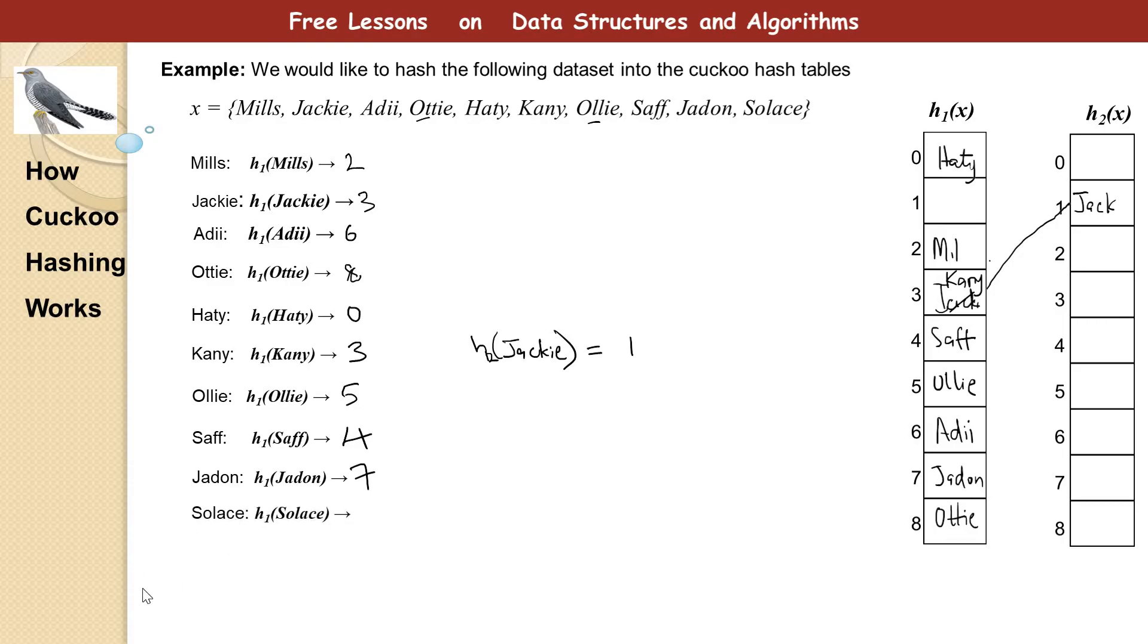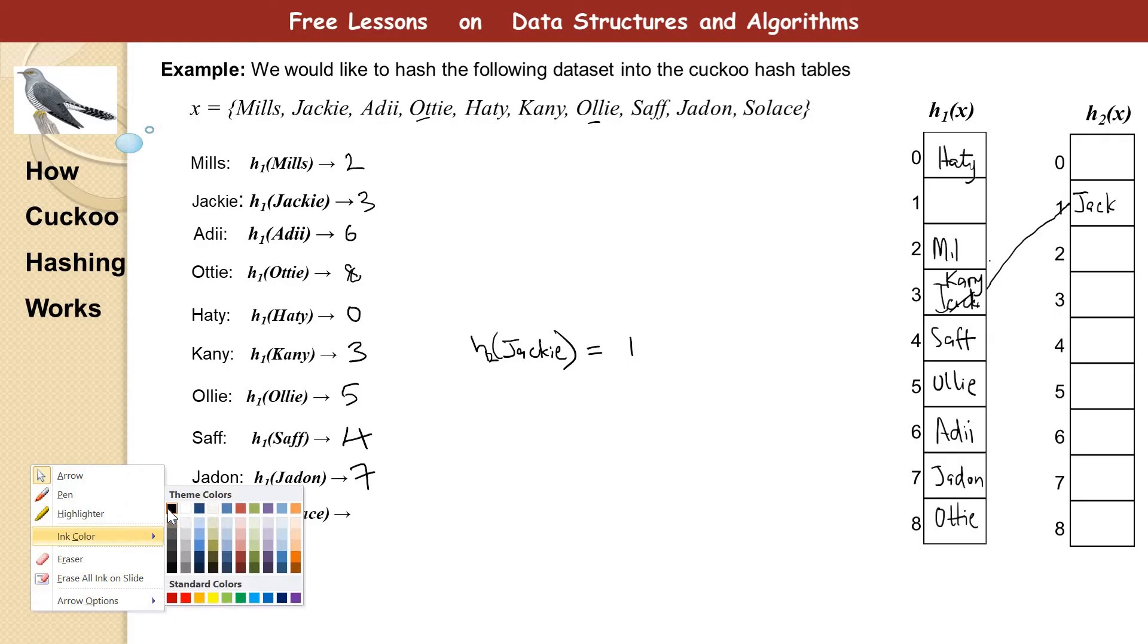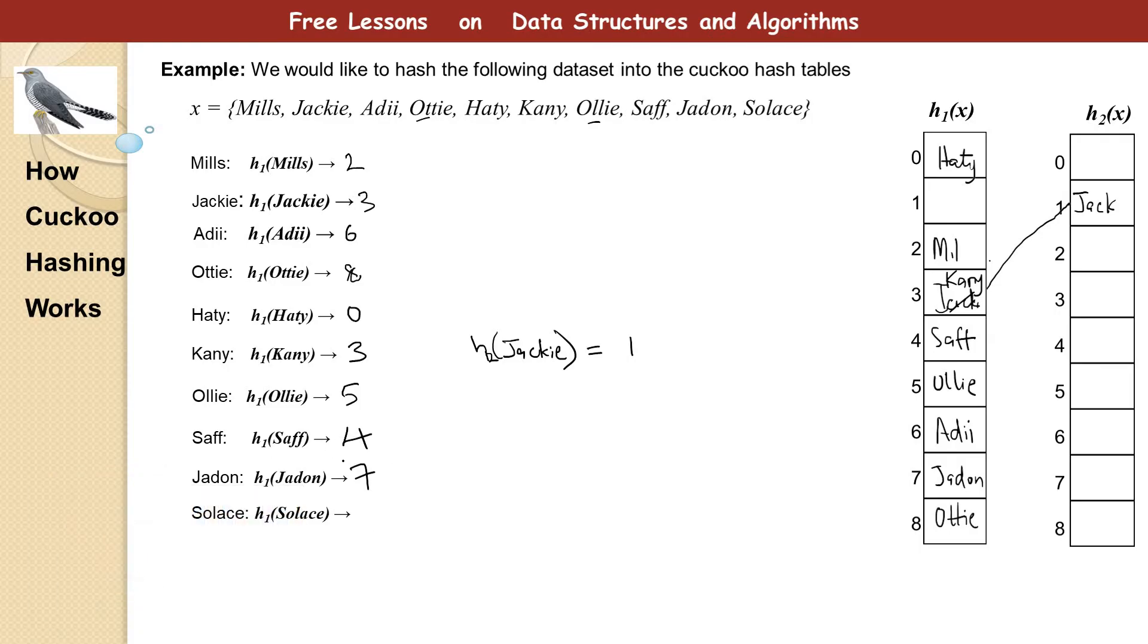So hope we'll be fortunate this last time. Because this is the last one. So h1 of Solace. Let's see. If we are fortunate. So h1 of Solace gives us eight. And we try. Wow. There is something in there. So we take out eight and then place Solace in there. So what we are going to do is now take what is in there and calculate h2 of that. So we calculate h2 of OT. Because OT was what is in there before. And that gives us one.